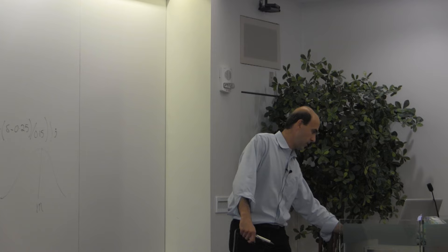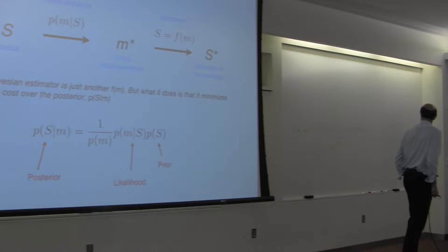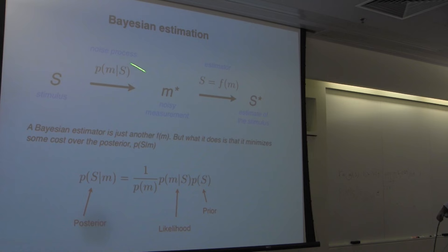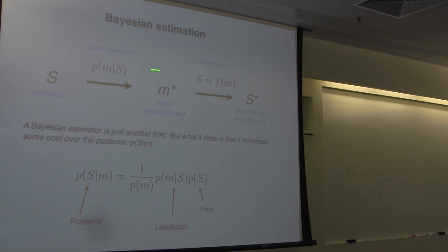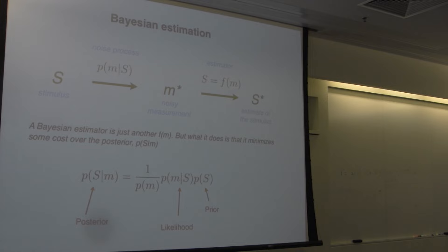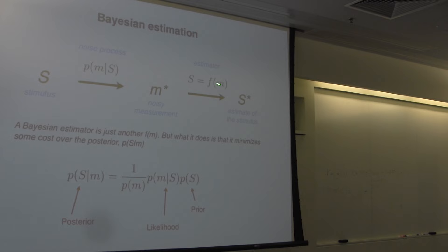Okay, let's move on now. Everyone okay to move on to Bayesian? So, Bayesian estimation. Same structure that we had: there is a stimulus, there is a noise process, it gives rise to a measurement, and we're going to try to infer S from M. The key point I want to convey is that Bayesian estimation is nothing but just a different f — a different estimator function. That's all what Bayesian estimation is.